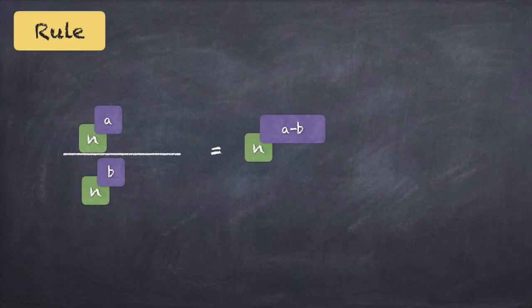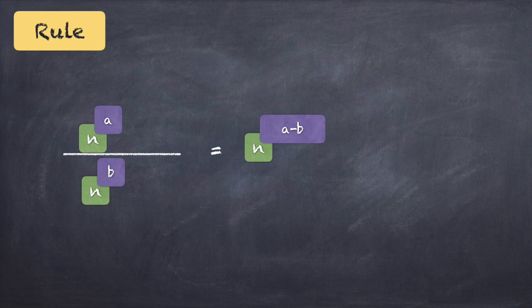Law number 2: n raised to a divided by n raised to b equals n raised to a minus b. The base is the same again with different powers. When dividing, the result is a subtraction of the powers — just as multiplication gave addition, division gives subtraction.